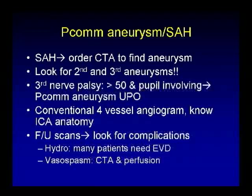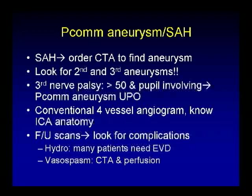When you see non-traumatic subarachnoid hemorrhage in a pattern in the basilar cisterns, order the CTA to find the aneurysm. Look for second and third aneurysms. When a patient comes in with a third nerve palsy, especially if it's involving the pupil, it's a PCOM aneurysm until proven otherwise. Conventional four-vessel angiograms are how we evaluate these — know your basic ICA anatomy. On follow-up scans, look out for these complications.